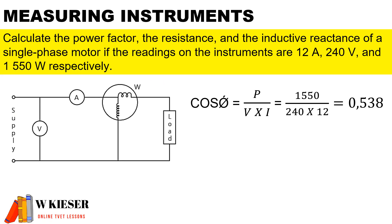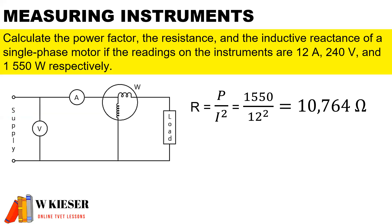To calculate the power factor for a single phase circuit, it is the power of 1550 watts divided by the voltage of 240 and the current of 12 amps, and we end up with a power factor of 0.538, which is quite low. That's a low power factor, which is not good.